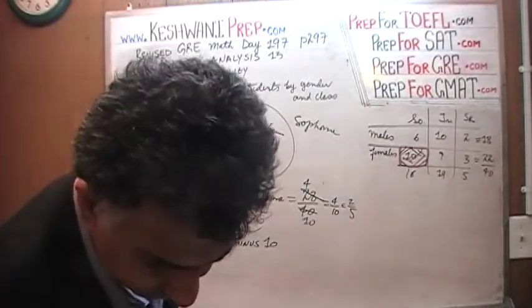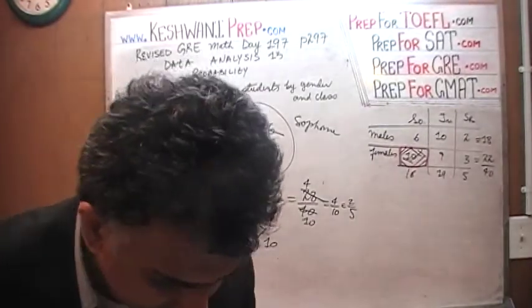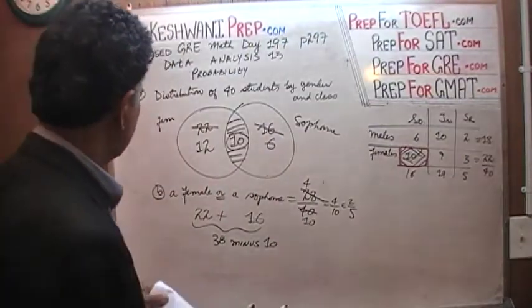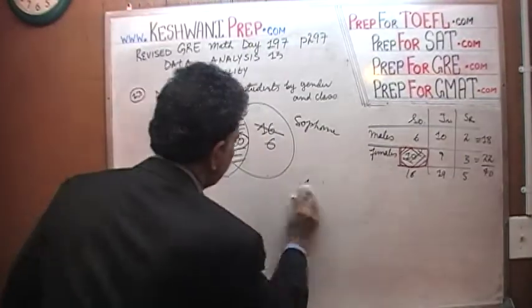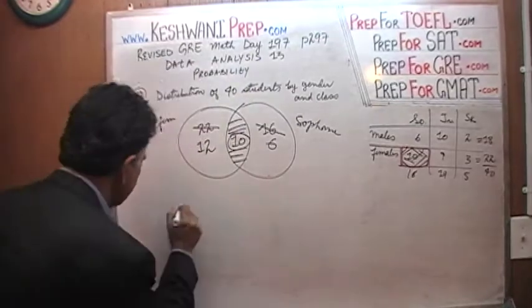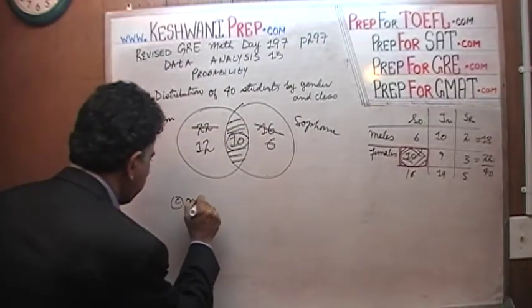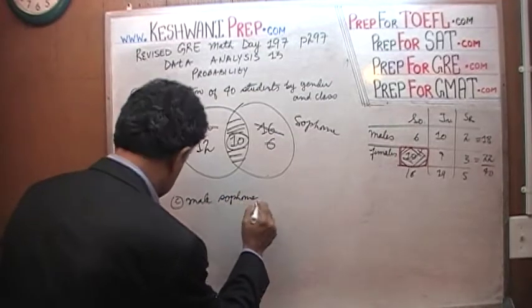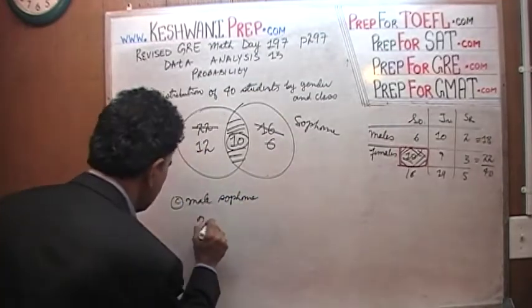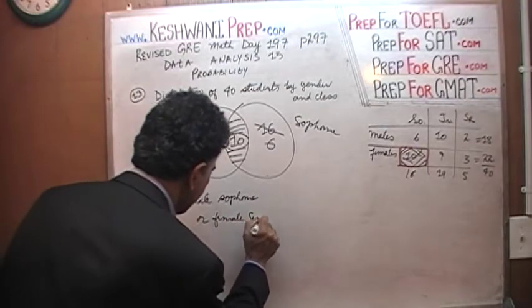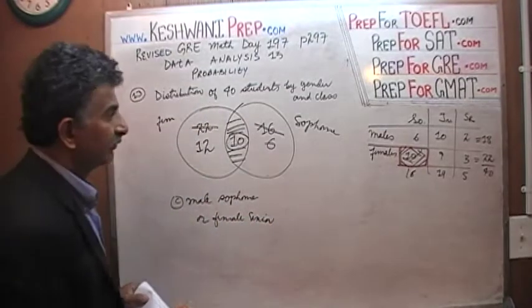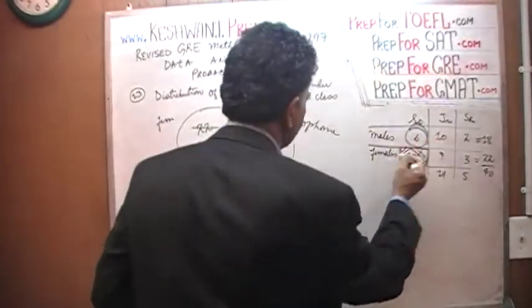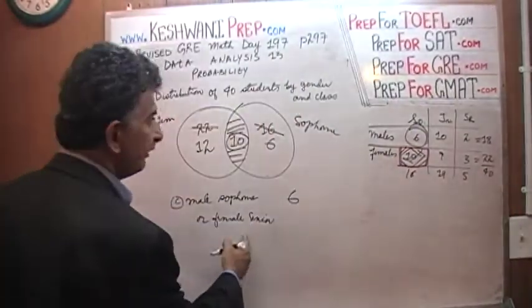Let's look at part C. A male sophomore or a female senior? A male sophomore or a female senior. How many male sophomores are there? Male sophomores, there are 6 of them. Or a female senior? Female senior, there are 3 of them.